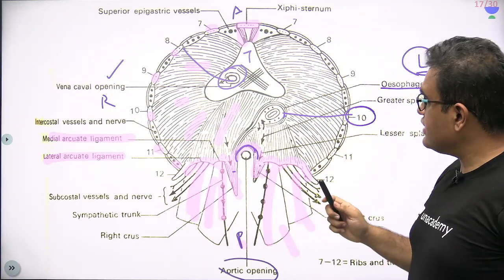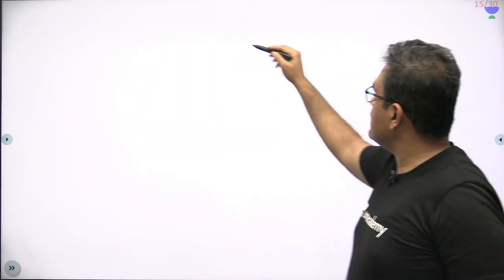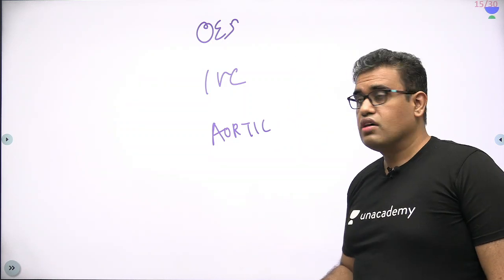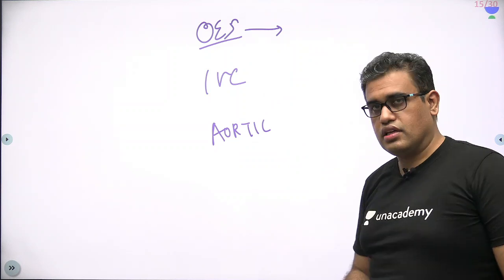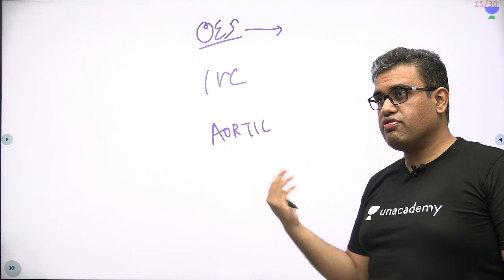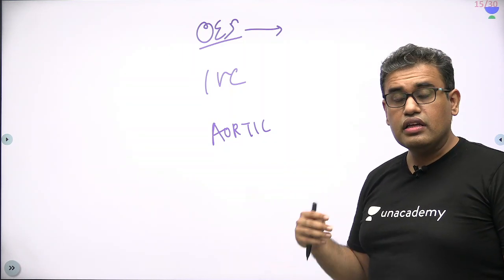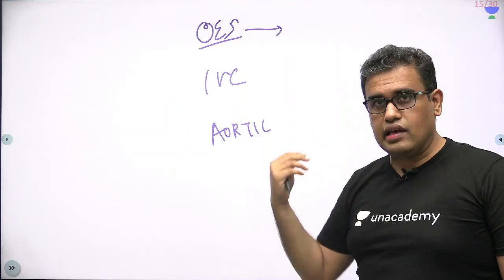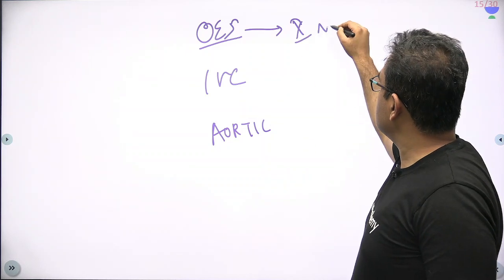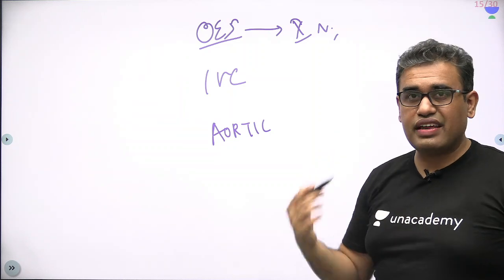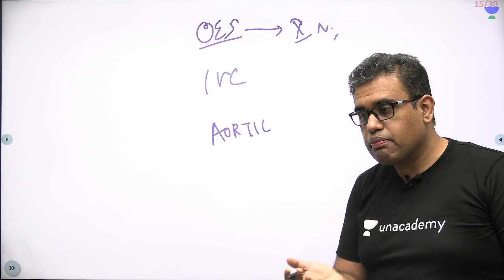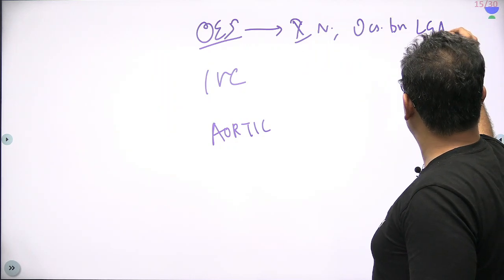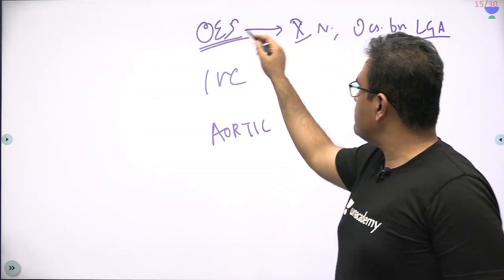Regarding what passes along with each structure through the major openings: the esophagus is part of the foregut going from thorax to abdomen. The nerve supplying the foregut — coming from the brain and going along with the esophagus to supply the stomach, liver, jejunum, ileum, and parts of the colon — is the vagus nerve on both sides. Also, since the lower end of the esophagus receives blood from the portal circulation via the left gastric artery, the esophageal branches of the left gastric artery also pass through the esophageal opening.